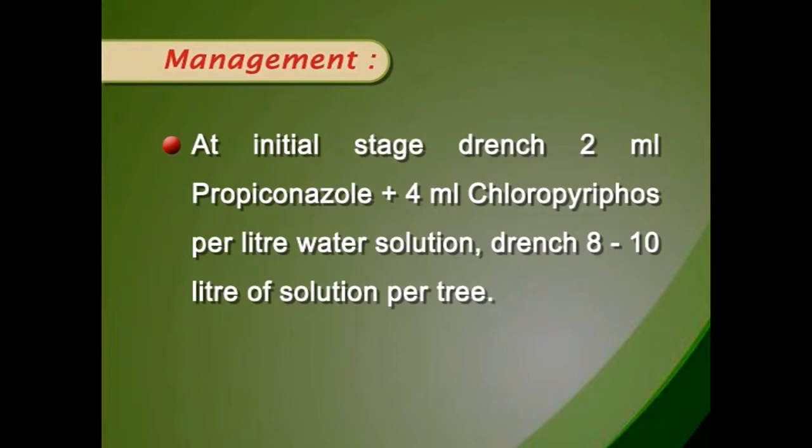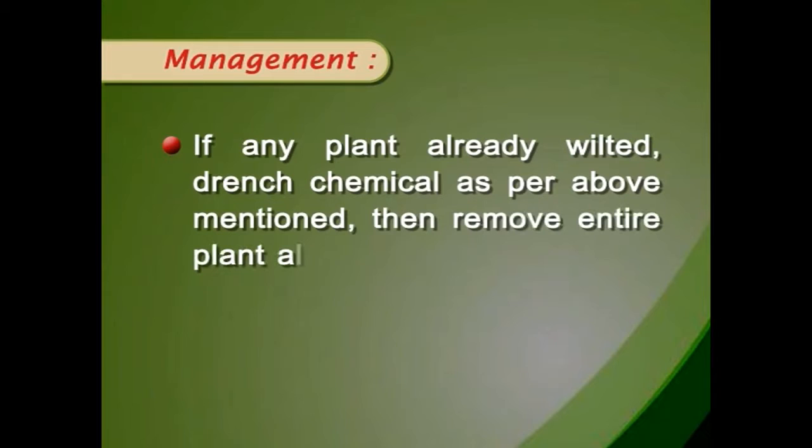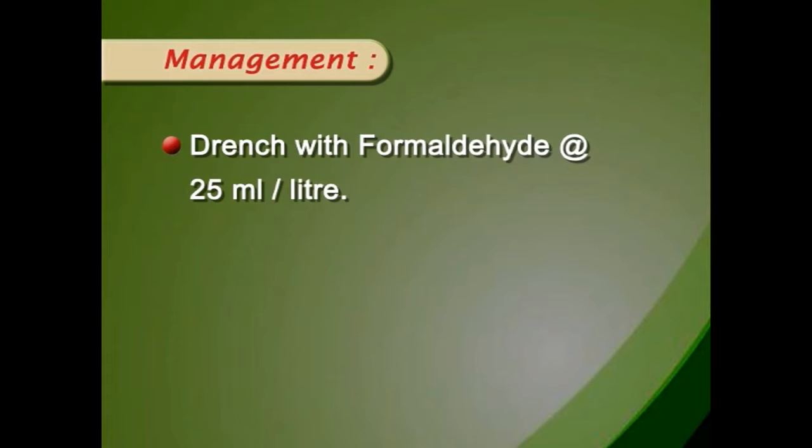If any plant has already wilted, drench chemicals as mentioned above, then remove the entire plant along with roots and burn it. Drenching with formaldehyde at 25 ml per litre is also recommended.